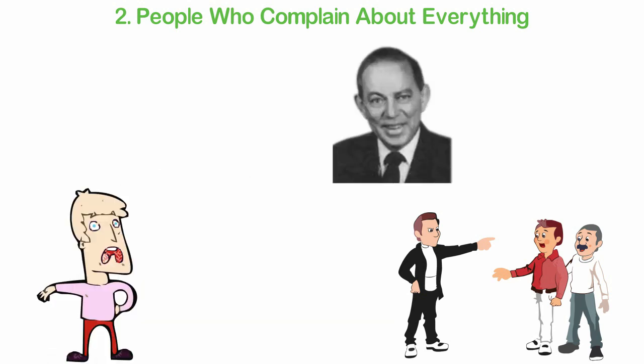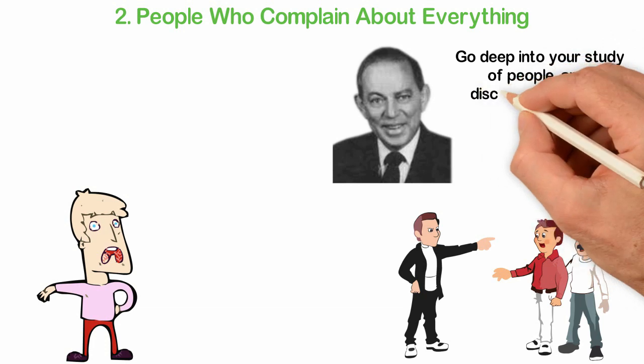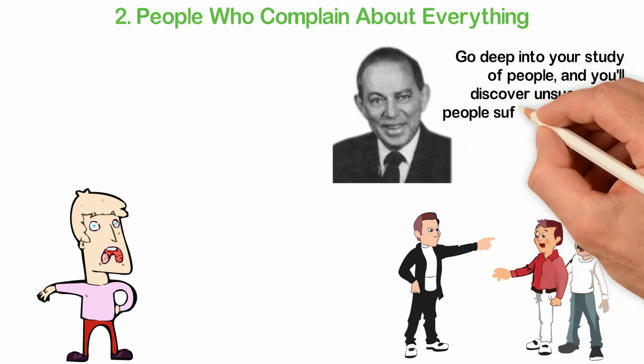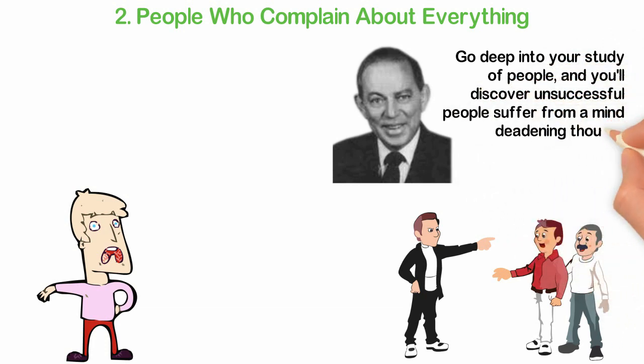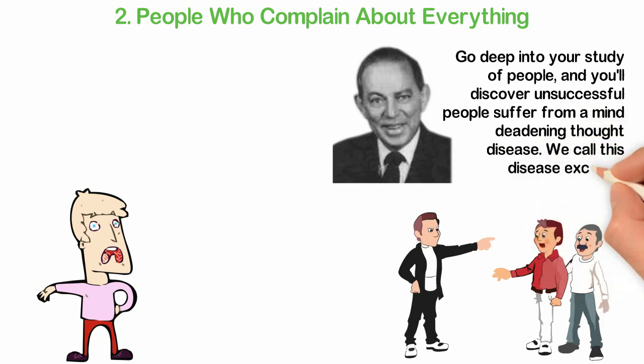David Schwartz, author of The Magic of Thinking Big summed it up this way: go deep into your study of people and you'll discover unsuccessful people suffer from a mind-deadening thought disease. We call this disease Excusitis.